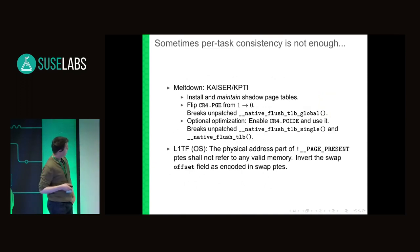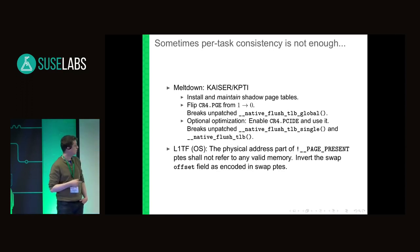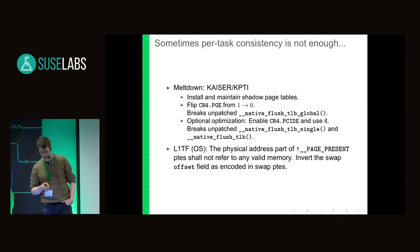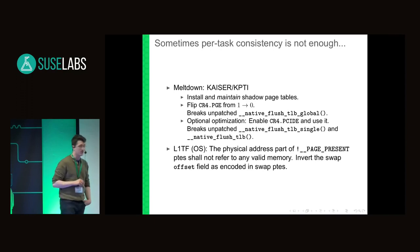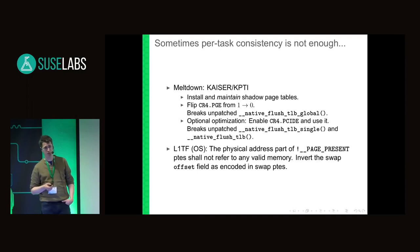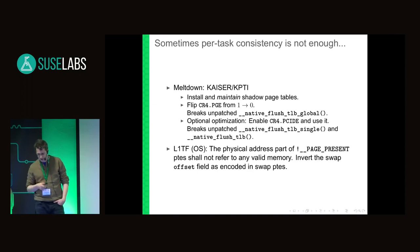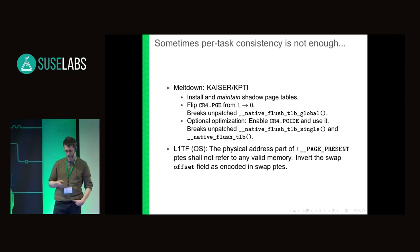This so-called per-task consistency is not enough when it comes to CPU vulnerabilities. For example, take Meltdown and KPTI — the kernel page table isolation patch set. Shadow page tables would have to be installed on the running system and in particular maintained. Another problem is that global paging had to be disabled and the unpatched TLB flushing primitives rely on that bit being on, so there are other problems with changing global state during the transition.